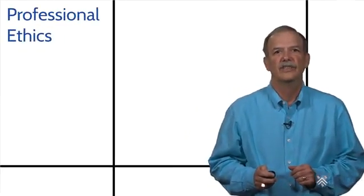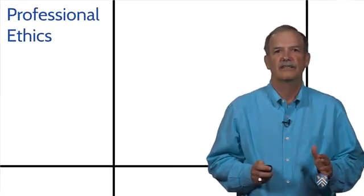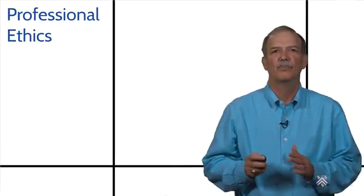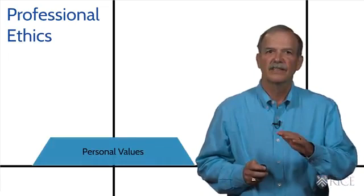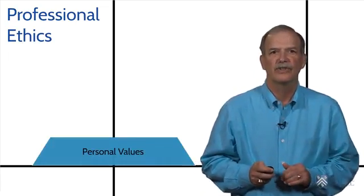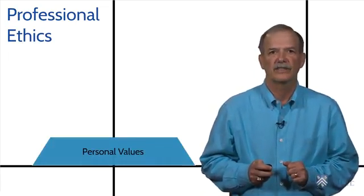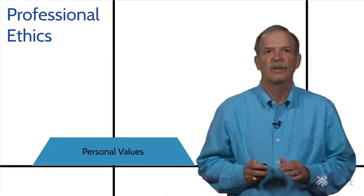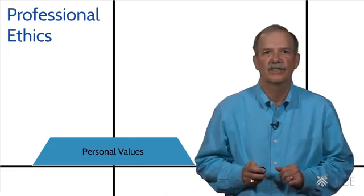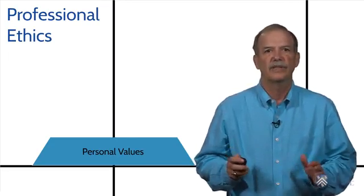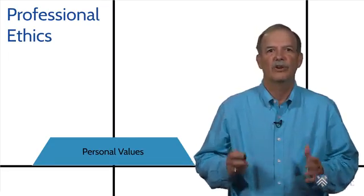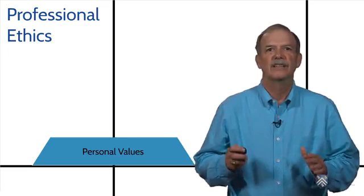So what values should we be looking at? What's the basis for building a good set of professional ethics? As we've talked about, personal values are the foundation of all professional ethics. Our decisions should be based on a consistent set of personal standards. These standards typically come from family, culture, the way we've been taught. They are basically who we are.